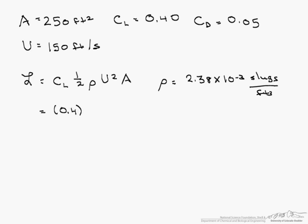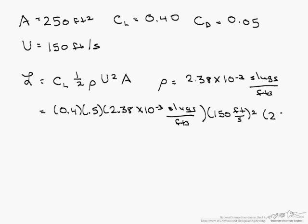This is 0.4 times 0.5 times 2.38 times 10 to the minus third slugs per feet cubed, multiplied by 150 feet per second squared times 250 feet squared.